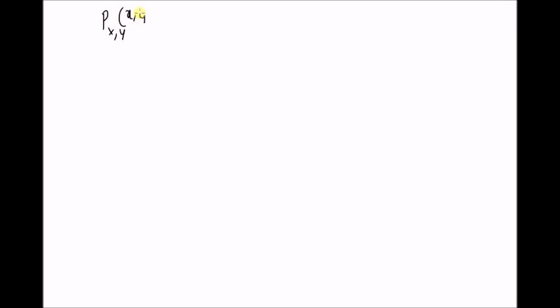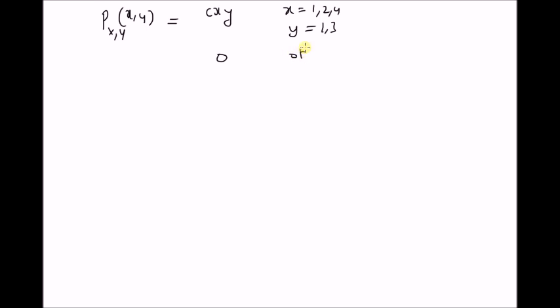So given the joint probability mass function P(x, y) = C · x · y for values of x equal to 1, 2, 4 and y equal to 1, 3, and 0 otherwise.